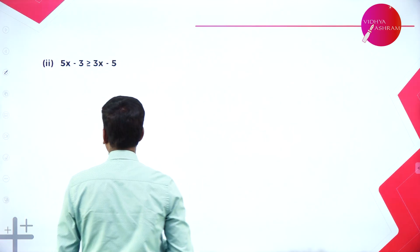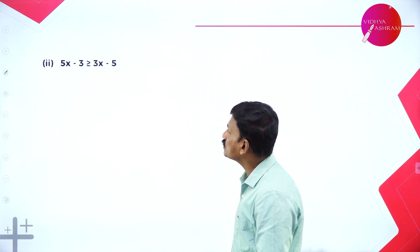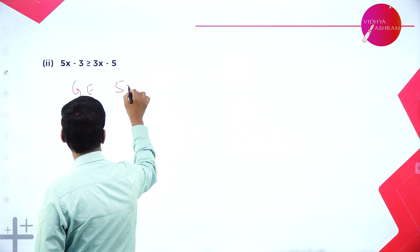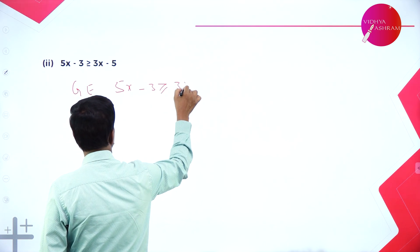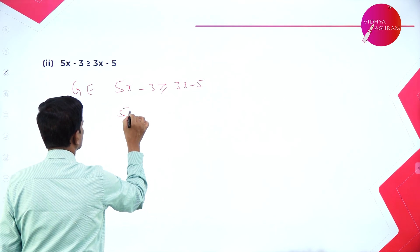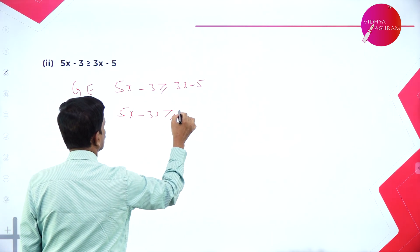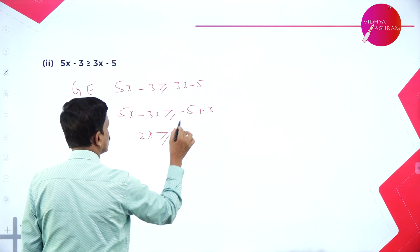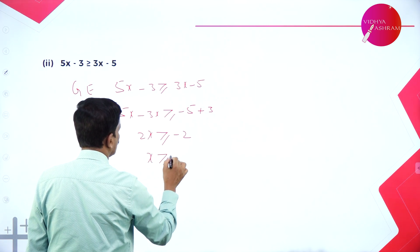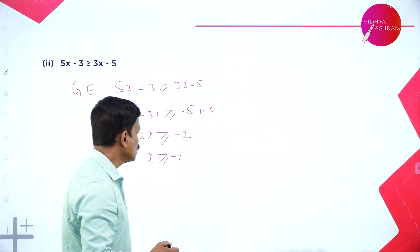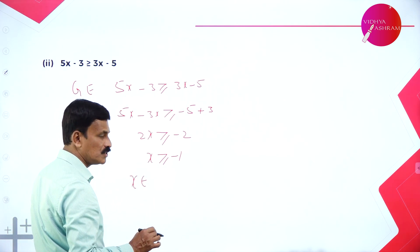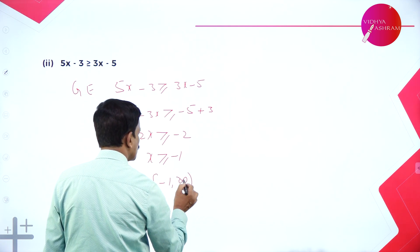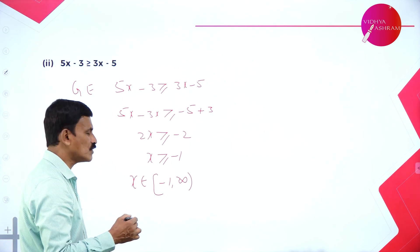Move on to the next problem: 5x - 3 ≥ 3x - 5. The given equation can be written as 5x - 3x ≥ -5 + 3, which gives 2x ≥ -2, so x ≥ -1. Since it is greater than or equal to -1, the solution set is x ∈ [-1, ∞), a closed interval at -1.